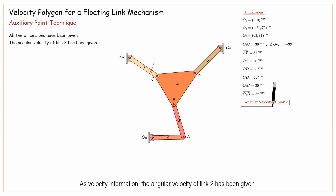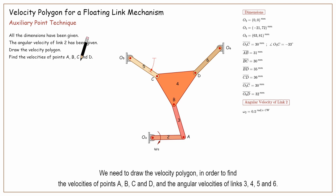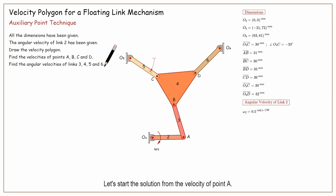We need to draw the velocity polygon in order to find the velocities of points A, B, C, and D, and the angular velocities of links 3, 4, 5, and 6. Let's start the solution from the velocity of point A.